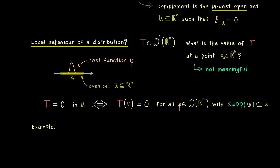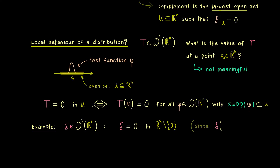With that definition we can already define the support for distributions. But first, let's look at an example: the delta distribution. It's not hard to see that delta is zero outside of the origin, so we write delta equals zero in R^n without the origin. The reason is that delta(φ) = φ(0), so if zero is not in the support of φ, we get zero. This is also the largest open set where delta equals zero, and therefore the support of the delta function is just the origin.